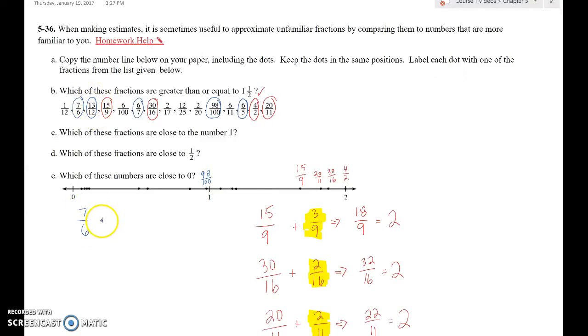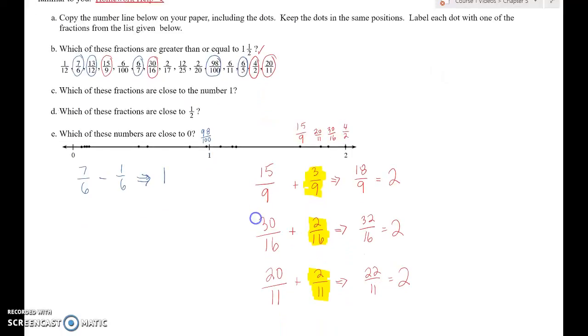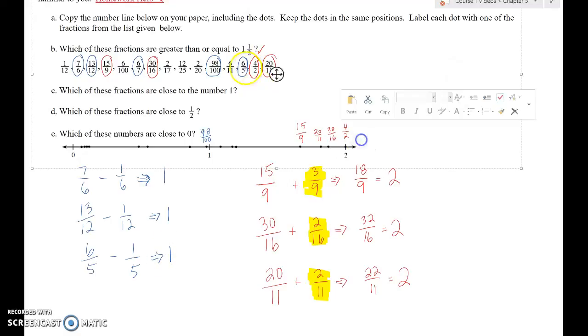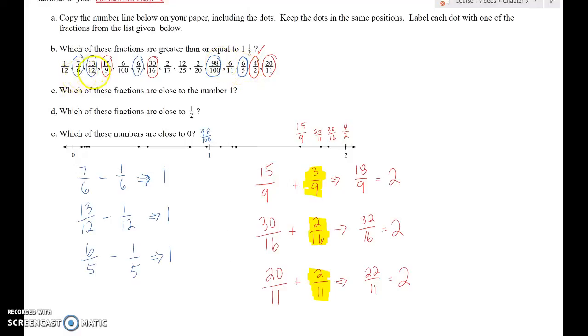So 7/6, if I take away, they're all bigger. So if I take away a sixth, I will get to 1. Same thing with 13/12. If I take away one of the twelfths, I'll get to 1. And the same thing with 6/5. And if I take away one of the fifths, I'll get to 1. So these are the ones that are just barely bigger. So 6/5, 7/6, and 13/12.